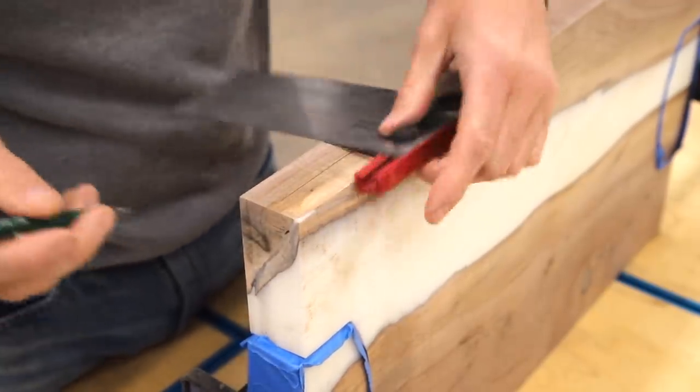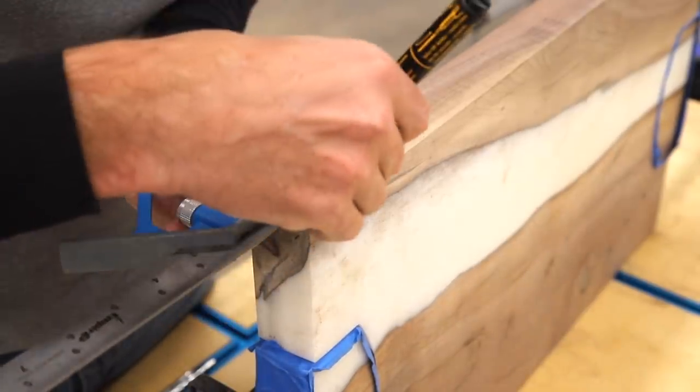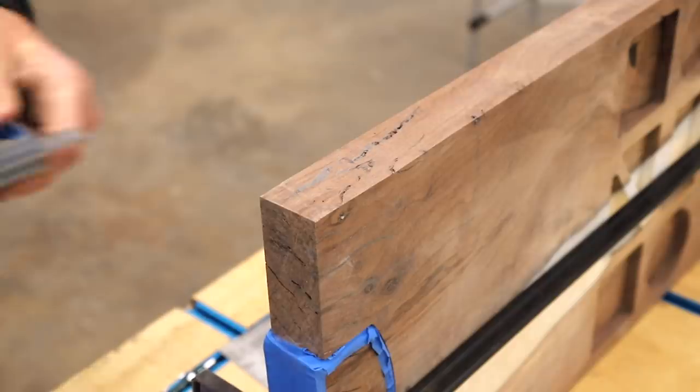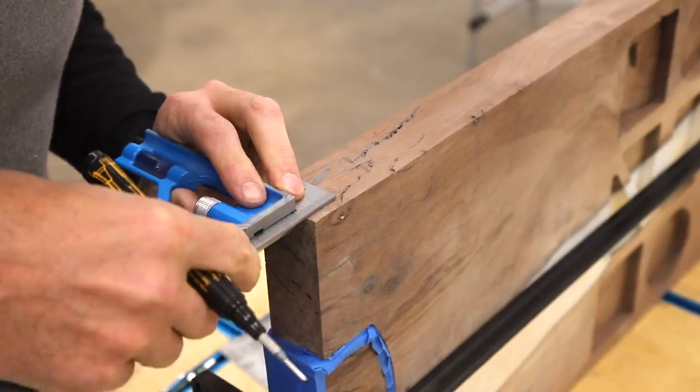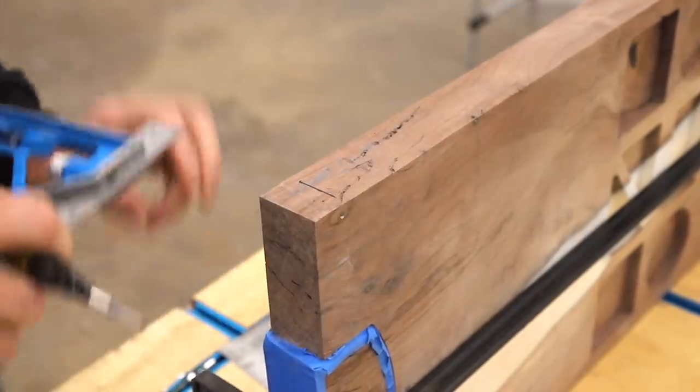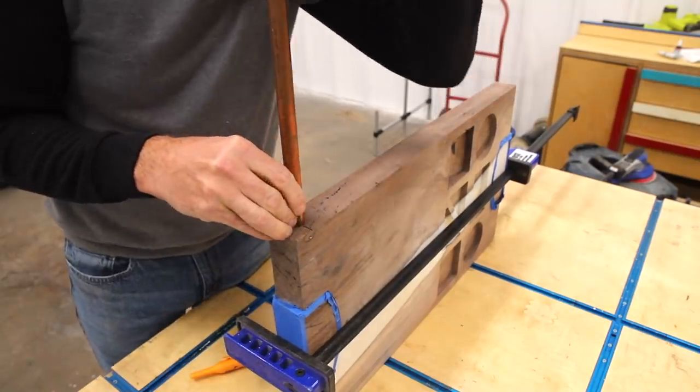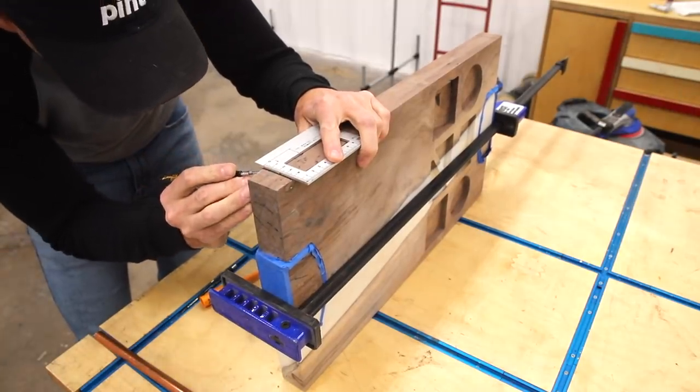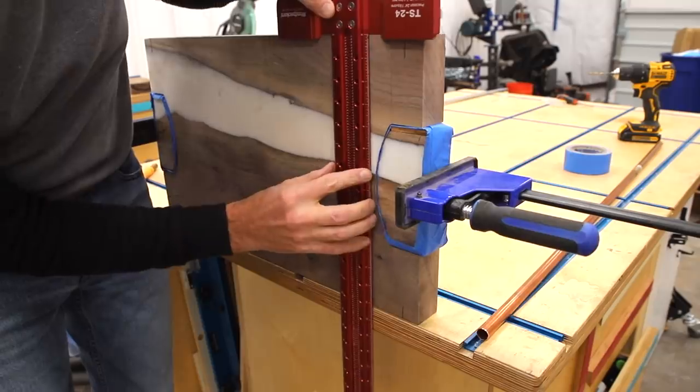I started laying out the placement for the handles making sure they were far enough inset so there was plenty of material left on the edges. Next I began transferring those marks over to the sides so I could ensure those holes would line up.